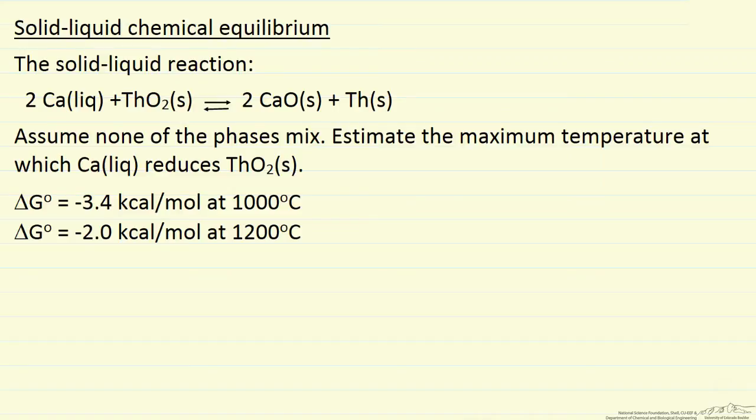This is an example of heterogeneous equilibrium, where we have different phases reacting. In this case, a liquid reacting with a solid to form two other solids. The critical thing is that we're assuming none of the phases mix - these are separate individual crystals, calcium oxide crystal different from thorium crystal. The question is what's the maximum temperature at which calcium liquid is going to reduce thorium oxide, and we're given delta G's for the reaction at two temperatures.